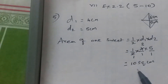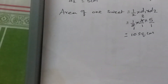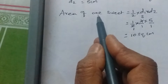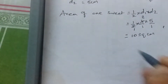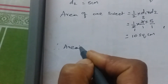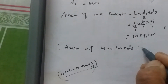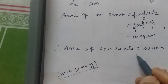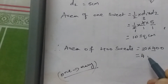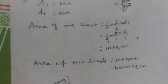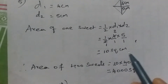Area of one sweet is 10 square centimeter. We are making 400 sweets, so we need to find the area of 400 sweets. One to many is multiplication: 10 × 400. Multiply 1 × 4 = 4, then count the zeros — one, two, three — giving 4000 square centimeter as the total area of all 400 sweets.